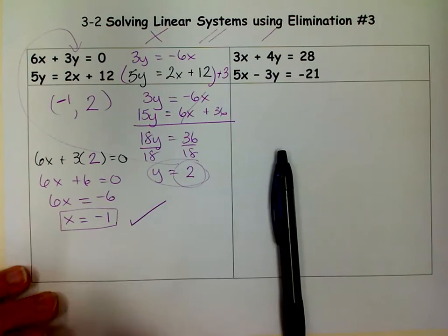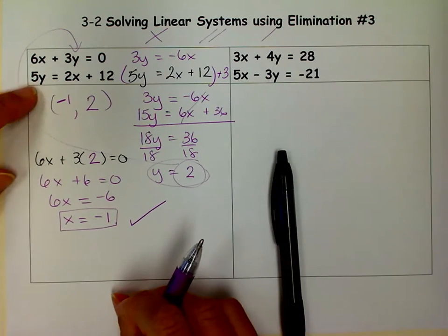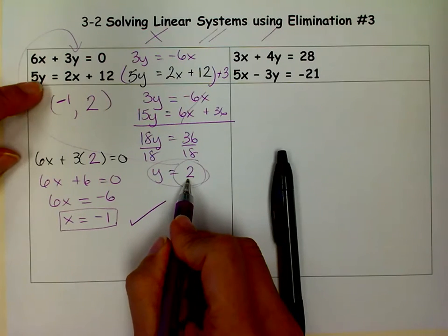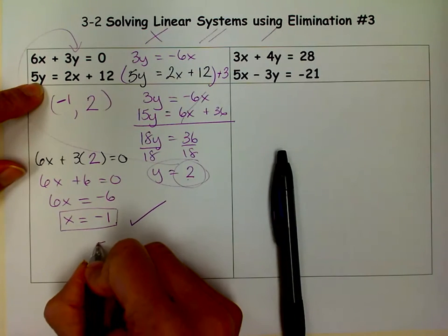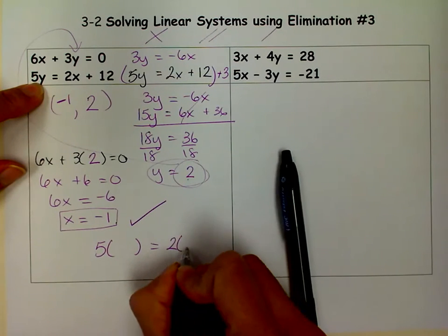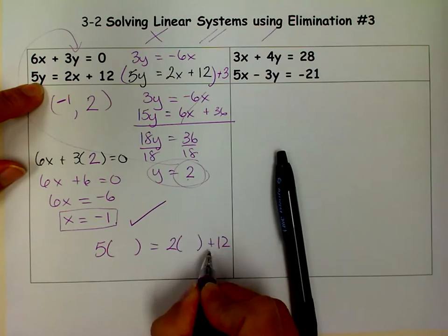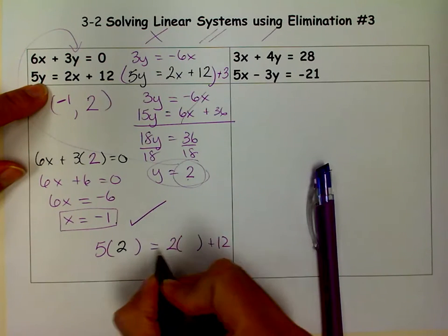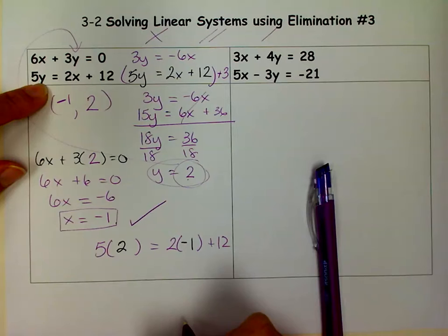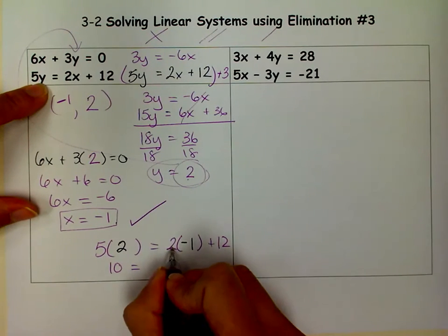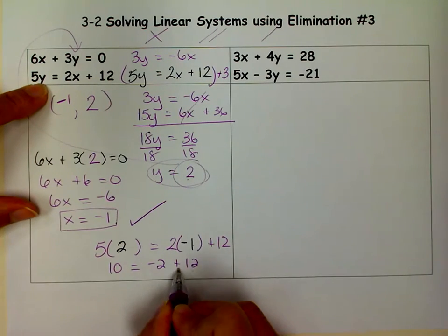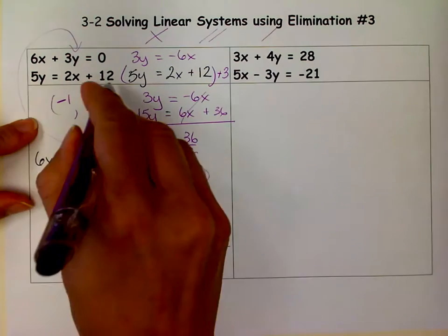Now for the check. So in my check I'm going to check into the second equation. I always like to plug the first variable that I get into the first equation and always check into the second equation just so that I don't forget which one I've already used. So here's my second equation. But instead of 5Y I'm going to put a 2. And instead of X I'm going to put a negative 1. And let's see if those sides are equal. 5 times 2 is 10. 2 times negative 1 is negative 2 plus 12. And 12 minus 2 or negative 2 plus 12 does equal 10. So I checked. I know that that is the right answer.